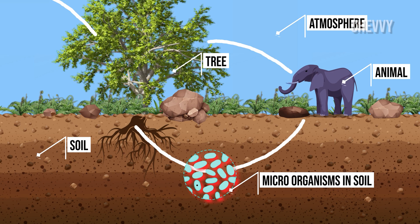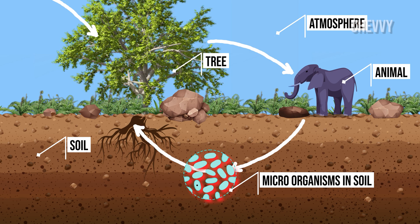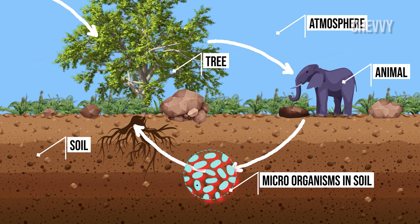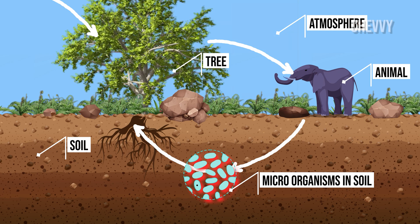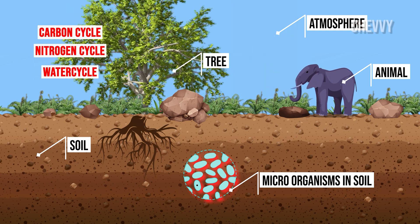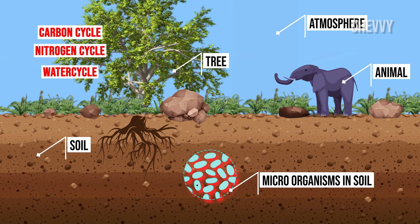The exchange of chemical elements and compounds between organisms and their environment is referred to as a biogeochemical cycle in science. The carbon, nitrogen, and water cycles are the three main biogeocycles.